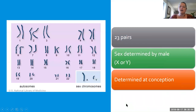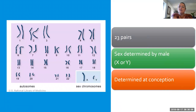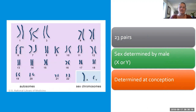So, 23 pairs of chromosomes — sex is determined by the male, it's either an X or a Y, and it's determined at conception. There are some ideas that we can influence which sperm make it to the egg. The male sperm are faster but die sooner, and the female sperm are slower but live longer. So depending on when the egg is released, there's some idea that you could potentially influence whether you're going to have a male or female baby.